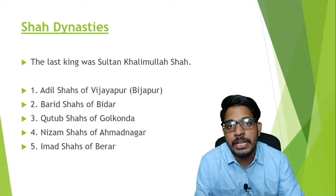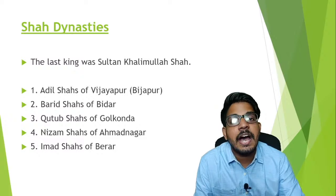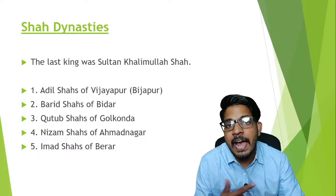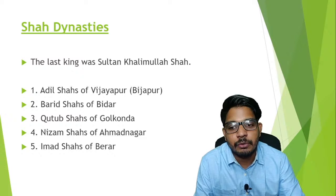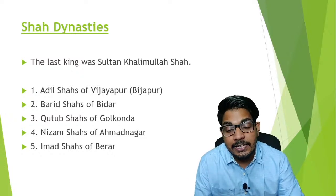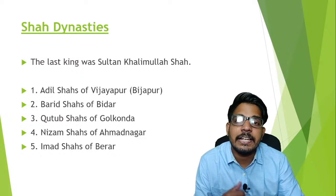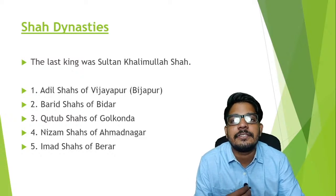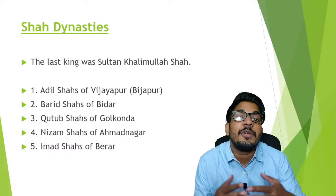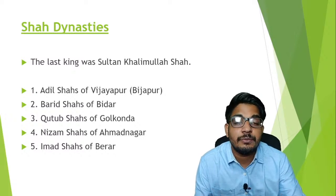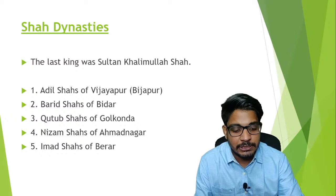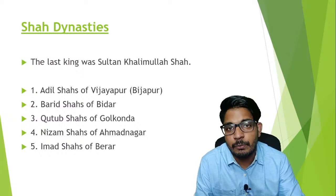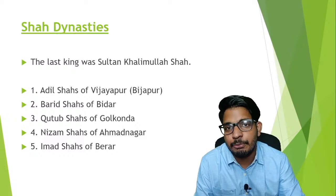Let me read them one more time: first, Adil Shahs of Vijapur; then Barid Shahs of Bidar; then Qutb Shahs of Golconda; then Nizam Shahs of Ahmadnagar; and finally Imad Shahs of Berar. We are going to analyze each of them one by one, starting with the Adil Shahs of Vijapur.